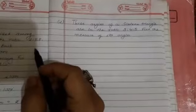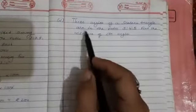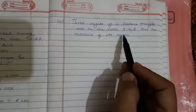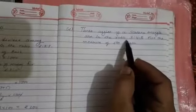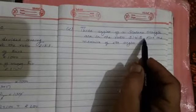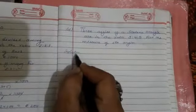Now my dear students, let's come to another question. Three angles of a scalene triangle are in the ratio 3:4:5. Find the measure of its angles. So we have the ratio of the angles 3:4:5, and we know that in a triangle, the sum of all angles is 180 degrees.